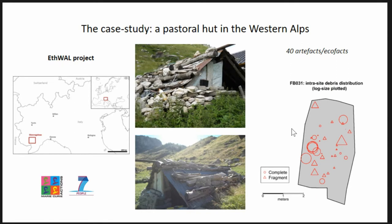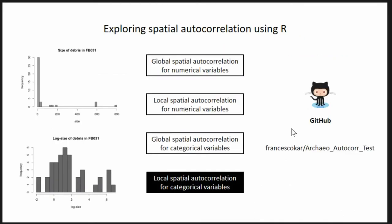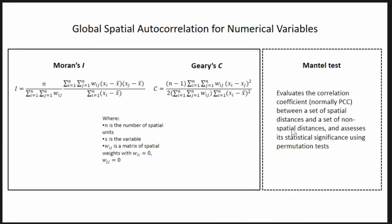I implemented different types of analysis from global spatial autocorrelation to local spatial autocorrelation for numerical and categorical data. The two types of variables that I will address are size, which is represented by the size of the different symbols, and the preservation of the objects. So I found fragments and I recorded complete objects. All the analysis are in my GitHub, you can find them there and go through them, and there are also some websites and blogs that might be useful for understanding some of these analyses.